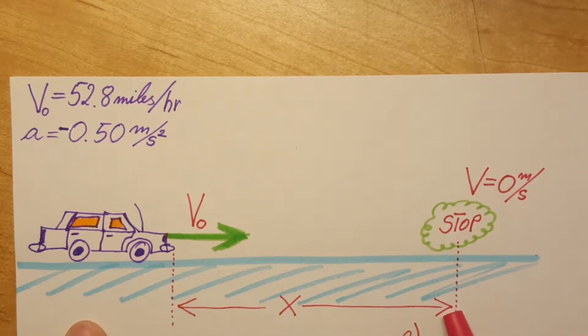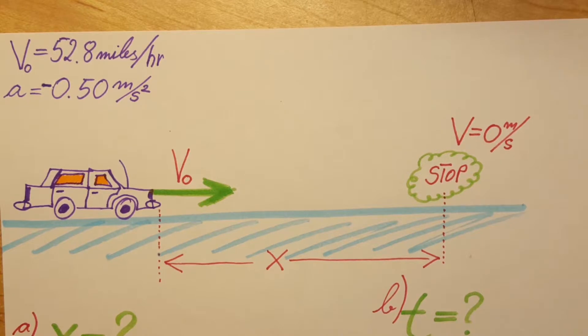They're asking us to find the time it takes till it stops, and then the distance it travels during the fifth second. First, let's change the units on this initial velocity of 52.8 miles per hour.